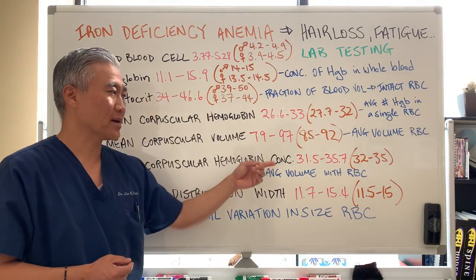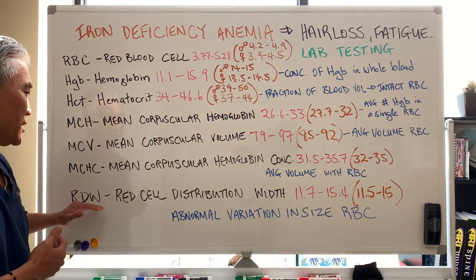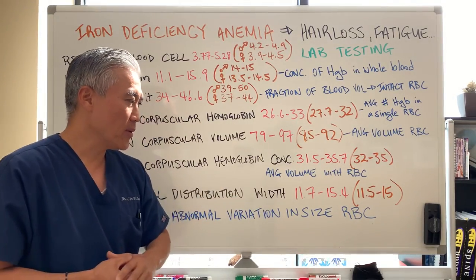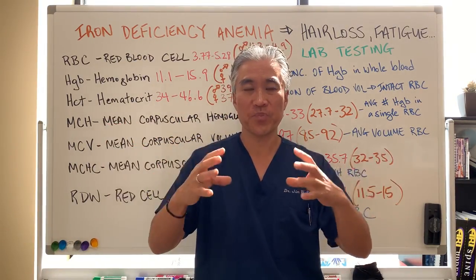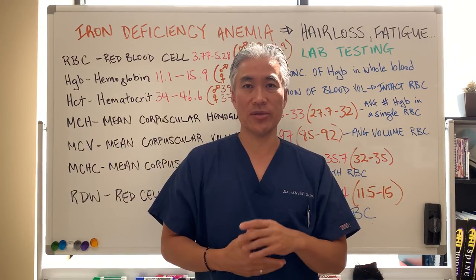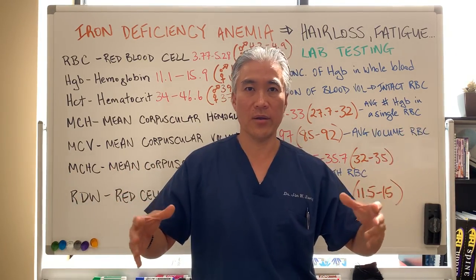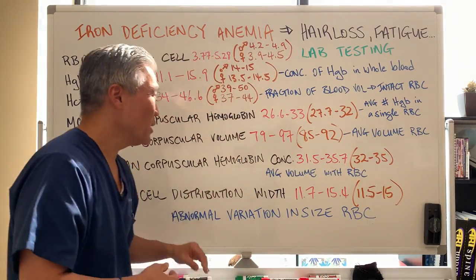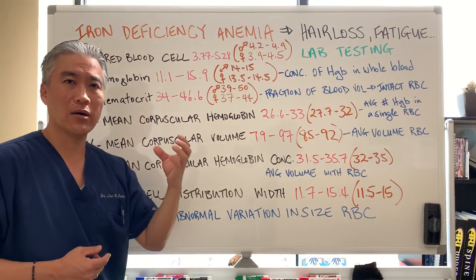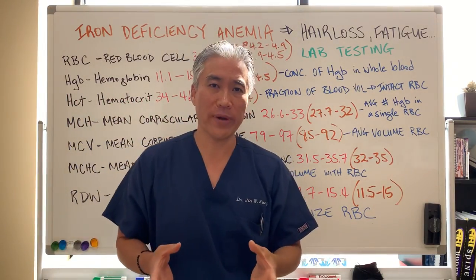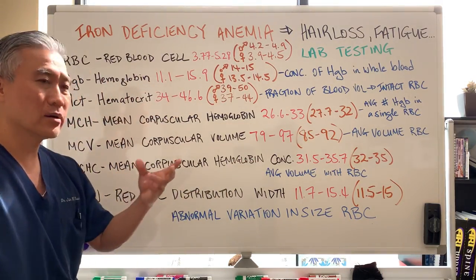MCHC is mean corpuscular hemoglobin concentration — that is the average volume with red blood cells. Then RDW, red cell distribution width, is the abnormal variation in size of the red blood cell. The width is basically from small to large. The wider it is, there's an indication that there are a lot of immature red blood cells. The numbers in red are indicative of lab ranges, so if you're outside of the lab ranges, it's considered pathology — it's abnormal.